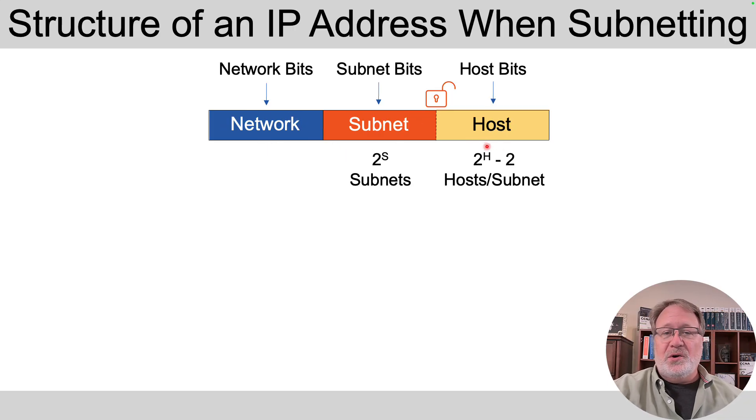We just talked about how to come up with those. And then you can do a calculation that says, if I've got S subnet bits, then there are 2 to the S subnets in the design. And if there are H host bits, there are 2 to the H minus 2 usable addresses in the subnet.